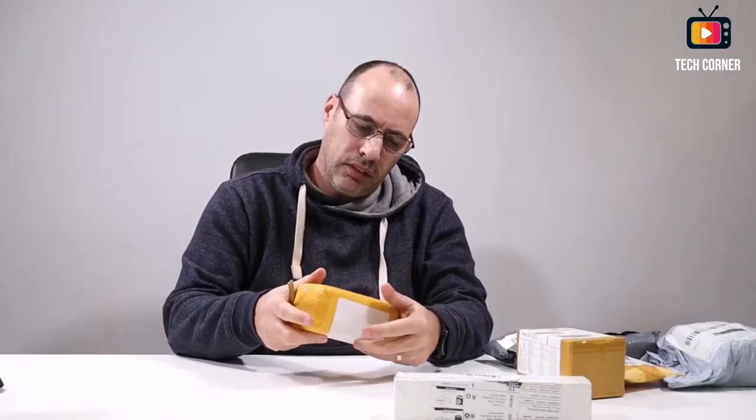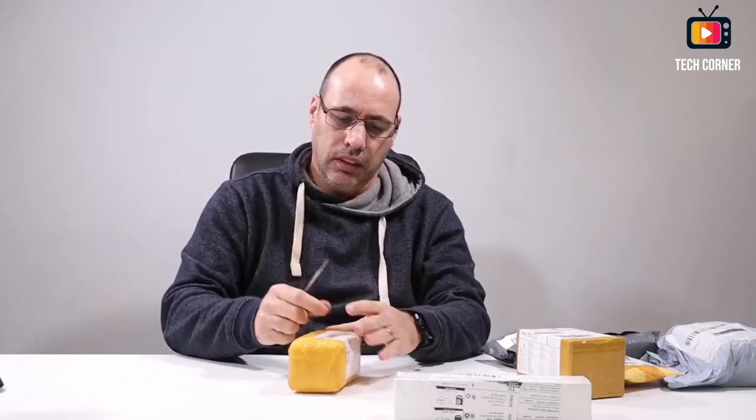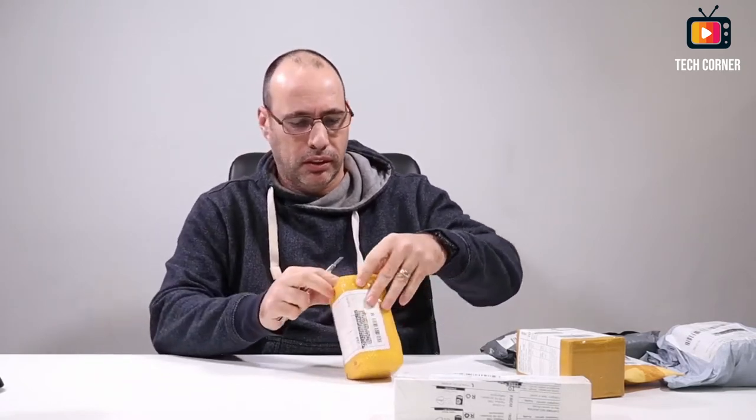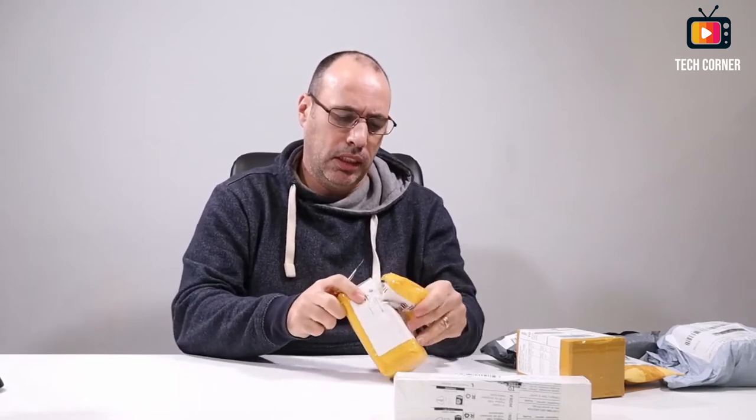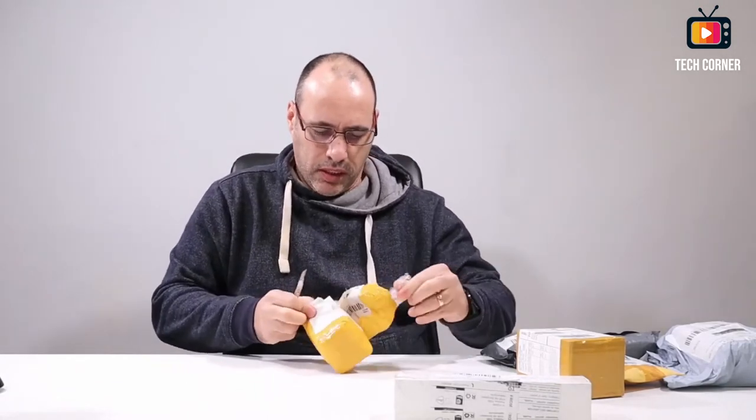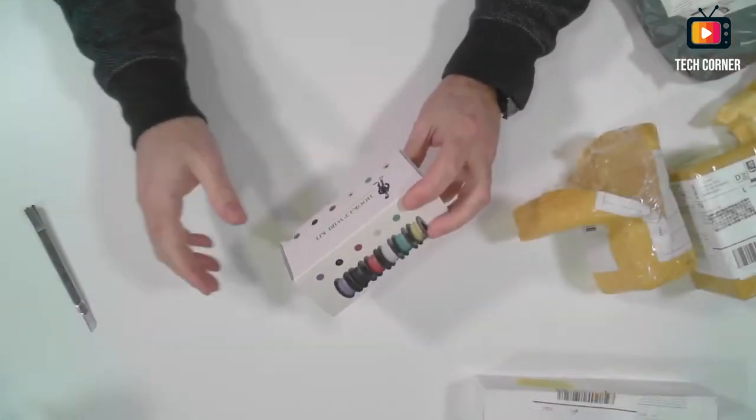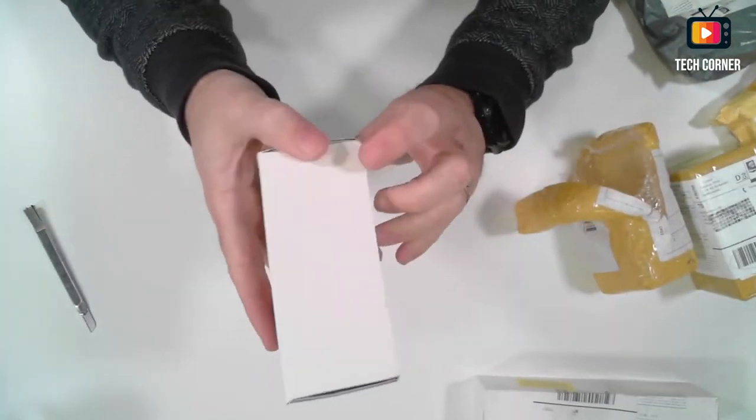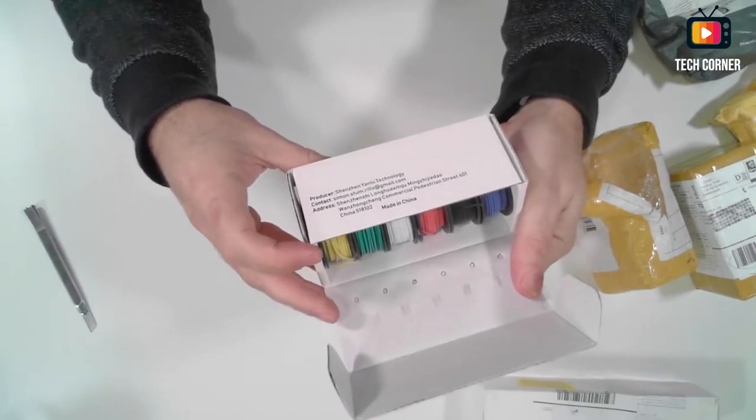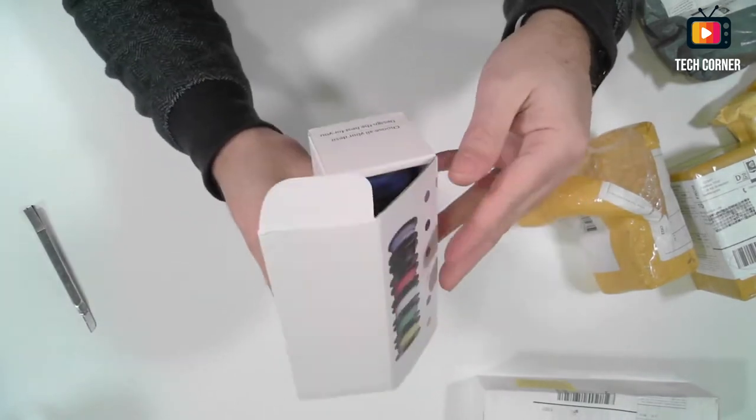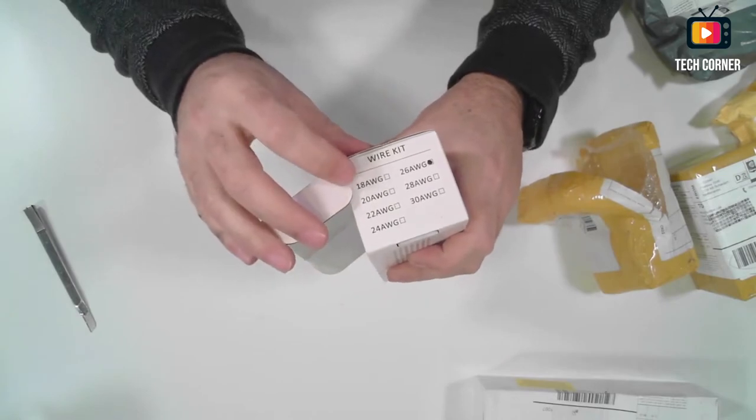So now we have here electrical wires, they say. Let's try to open it. So we have here a box of wires. This one is... I was trying to see. Ah, okay. 26 AWG.